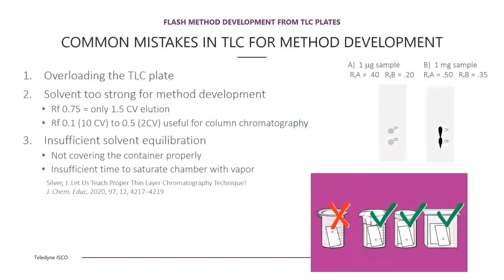Since TLC is so important for flash method development, running TLC plates properly is very important. One common error is overloading the TLC plates, causing spots to streak and move more quickly. A solvent system that shows very good separation for TLC analysis is not the best for flash chromatography. The spot should have an RF between 0.5, which is only two column volumes, and 0.1, corresponding to 10 column volumes. Anything longer than that generally causes broad peaks due to diffusion.